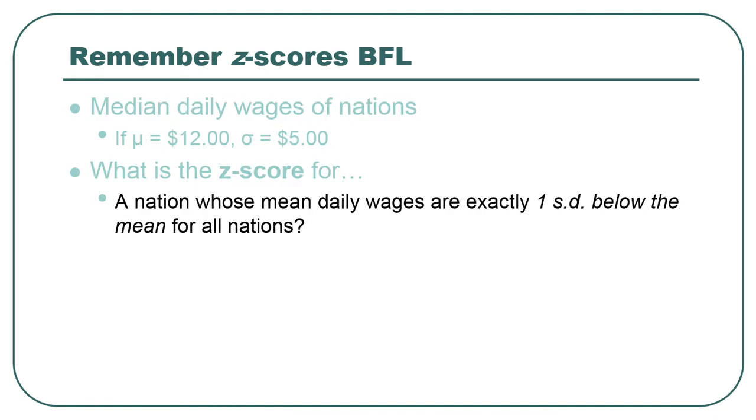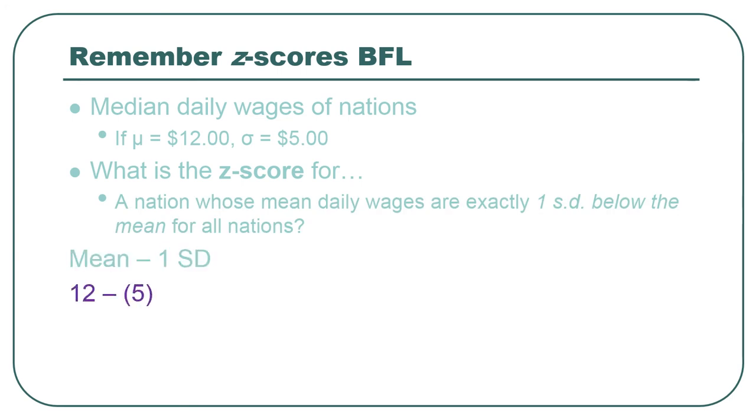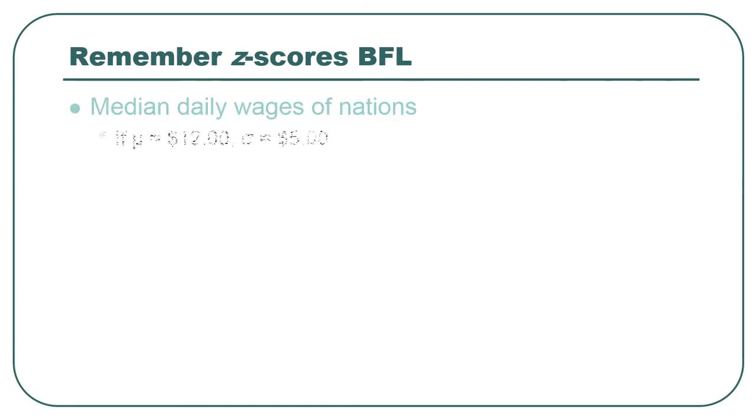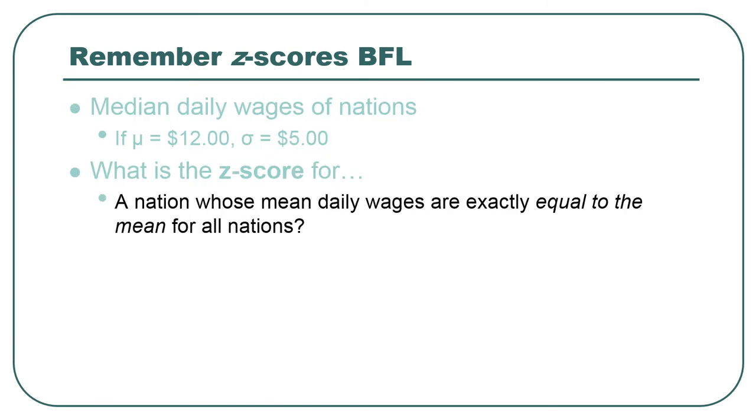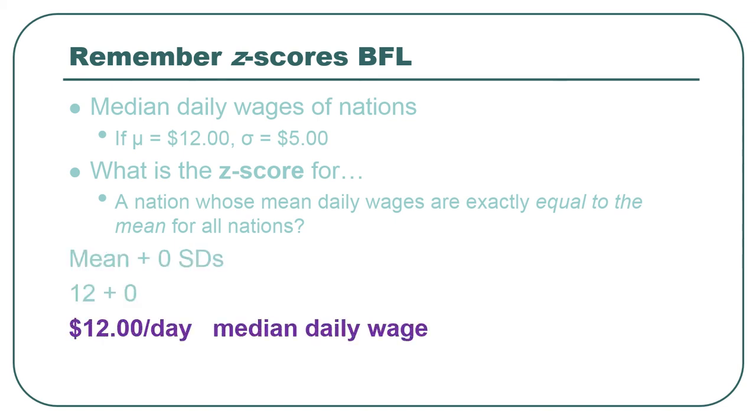For the same setup, what is the amount of money that is earned on median if in a nation whose median daily wages are exactly one standard deviation below the mean? It would be the mean minus one standard deviation. So you'd have a z-score of negative 1. And if you wanted to figure out the actual value, you'd just take the mean minus one standard deviation, 12 minus 5, so $7 a day. Or a nation whose median daily wages are exactly equal to the mean? Well, the z-score will be zero. Zero standard deviations away from the mean. The z equals zero. And the value will be the mean, $12 a day.